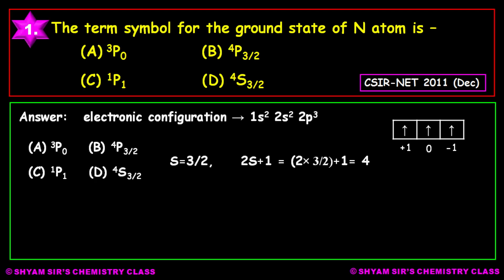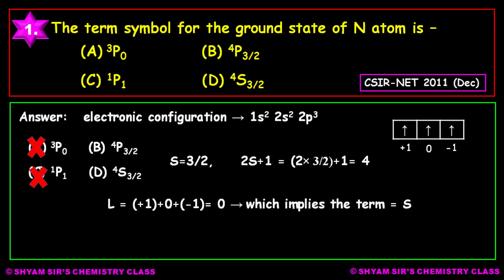So 2S+1 equals 4. Since 2S+1 equals 4, we look at the four options. Options A and C do not have 4 as the left superscript, so we can cancel them first. Now we have B and D, both of which have 4 as the left superscript. Now let us calculate the L value. For the 2p3 system, the m_l values are +1, 0, and −1, which sum to 0 — implying the S term. Since our term is S, option B, which shows the symbol P, is incorrect. Therefore option D is the right answer.